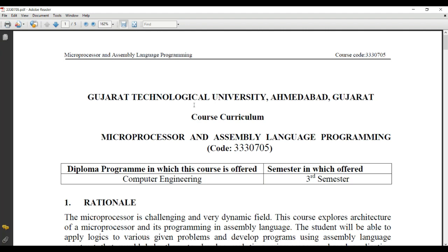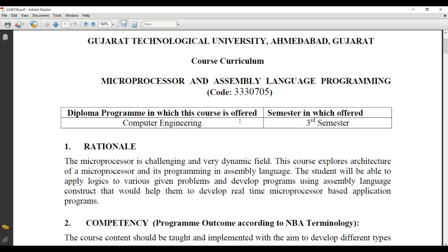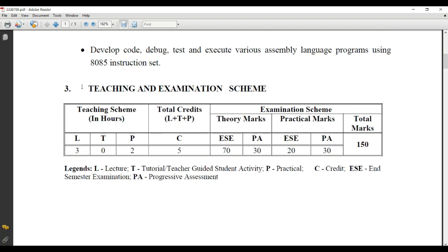This subject is designed by Gujarat Technological University, Ahmedabad Gujarat for the third semester of diploma computer engineering students. The subject code for microprocessor and assembly language programming is 3330705. Let us quickly look at the teaching scheme.